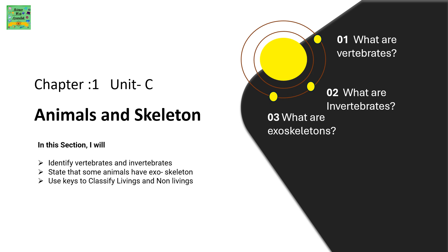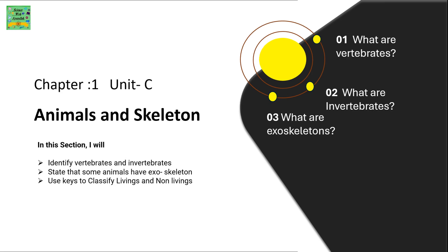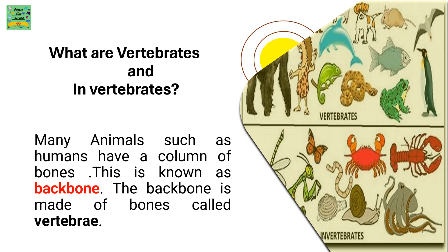Second, what are invertebrates? Third, what are exoskeletons? Many animals such as humans have a column of bones — this is known as a backbone. The backbone is made of bones called vertebrae.